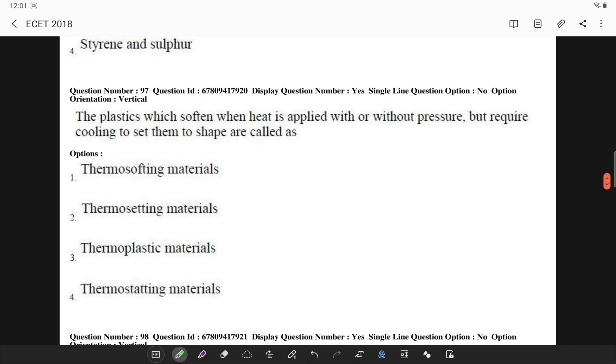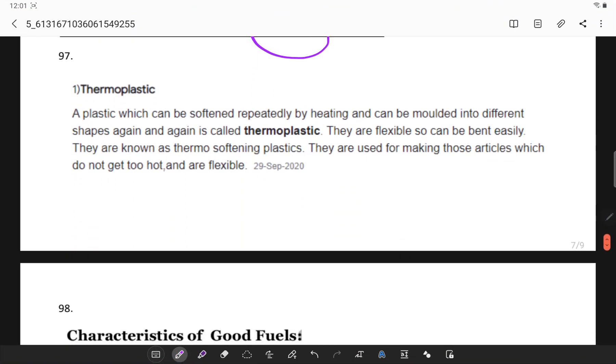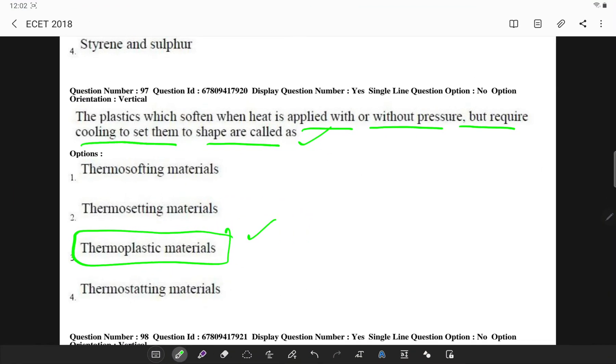The plastics which soften when heat is employed with or without the pressure but require cooling to set the shape is called thermoplastic materials. The student has to remember the comparison of thermoplastic and thermosetting. Thermoplastic is a plastic which is softened repeatedly by heating and can be moulded into different shapes again and again. So any number of times you can do it. These are flexible so that can be bent easily. They do not get too hot or remain flexible.